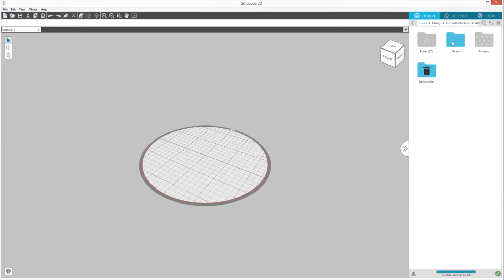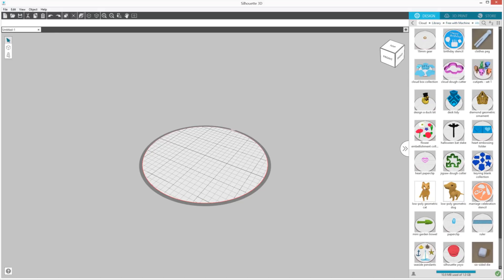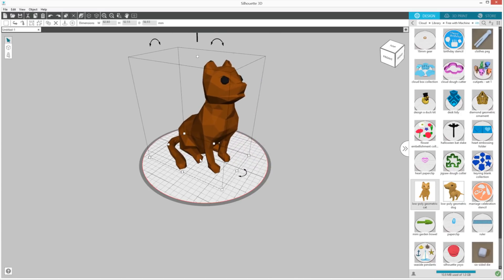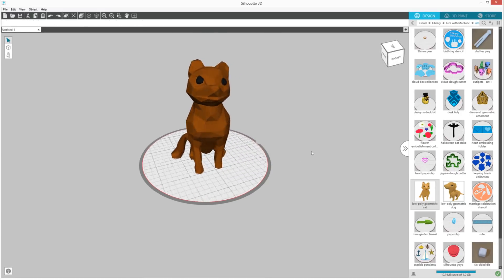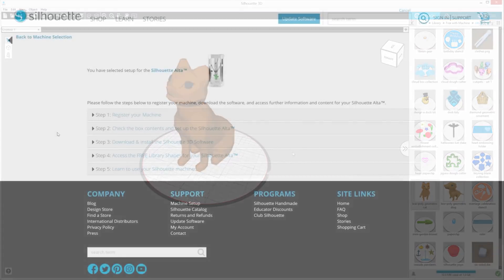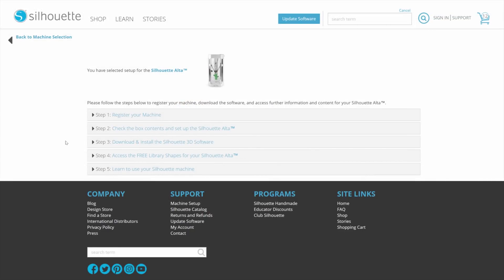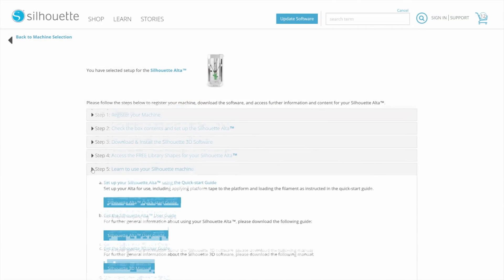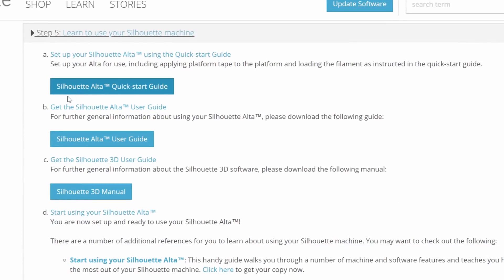To open one of your included 3D designs, open the free designs folder in your library. Explore the many other options available with the Silhouette Alta and the Silhouette 3D software by consulting the machine and software manuals on the setup page.